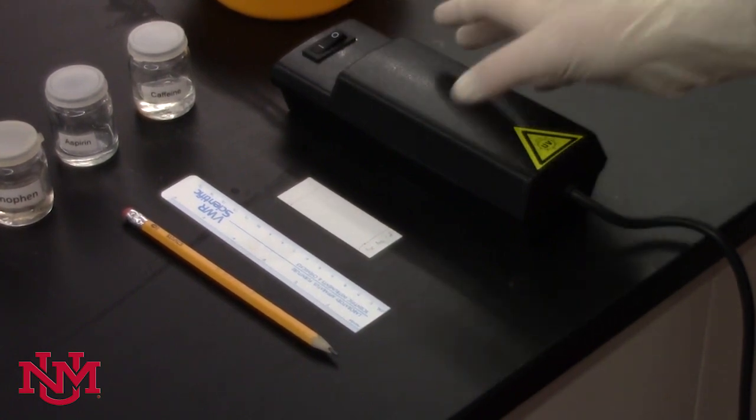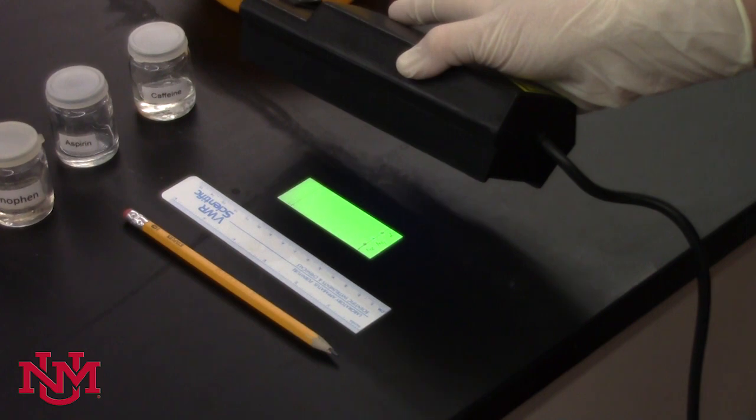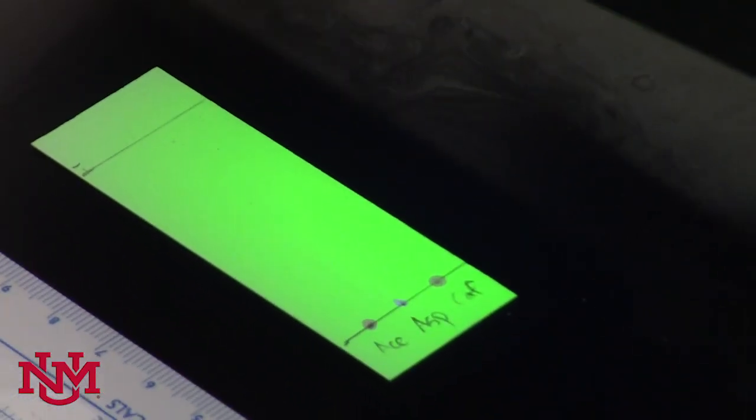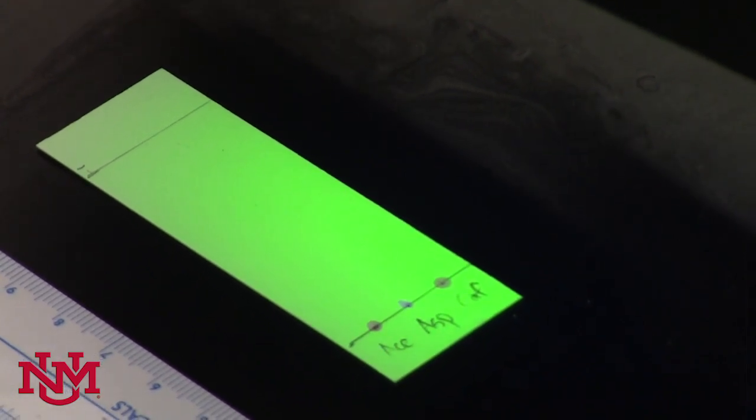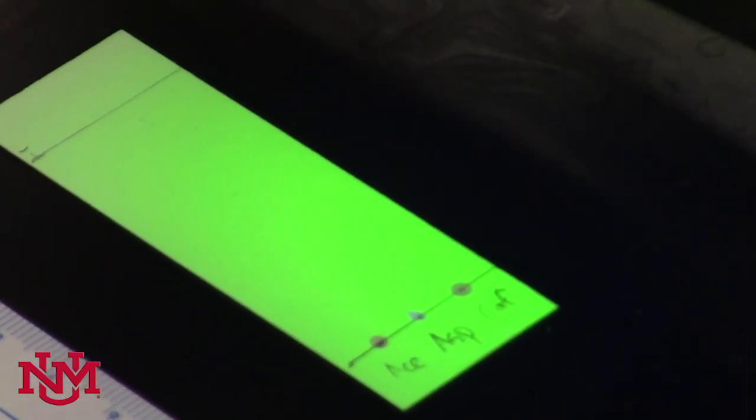If we turn it on and hold the UV lamp above the samples, you'll see that they're darker than the rest of the plate. They're actually quenching UV fluorescence, and that means since they're dark, we have successfully transferred enough sample and we can proceed with visualizing the TLC plate.